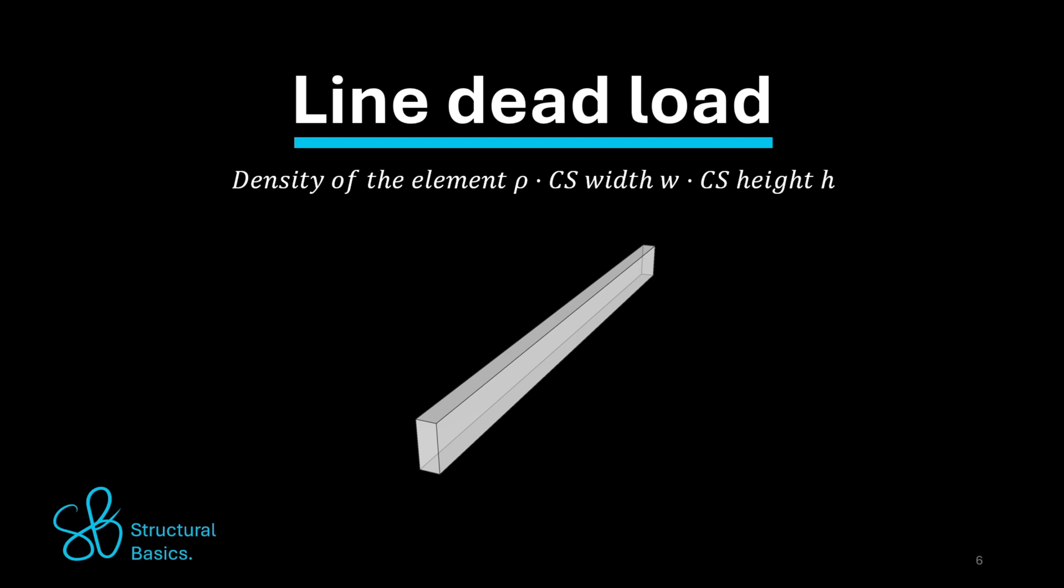The line dead load of a wooden glulam GL24H beam with a density of 420 kg per cubic meter, a cross-section width of 10 centimeters,